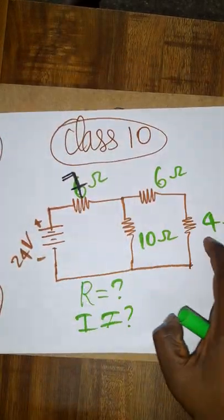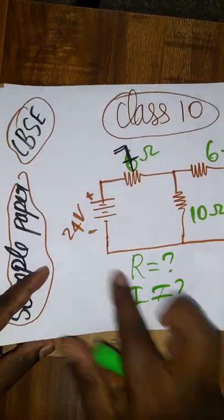So 7 ohms, 6 ohms, 4 ohms, 10 ohms. They want what is the total current, what is the total resistance. Total voltage applied is 12 volts.